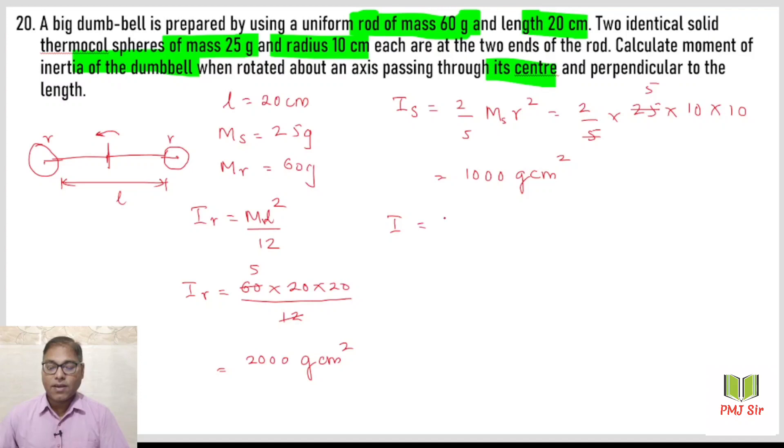Now the total system moment of inertia is: moment of inertia of the rod plus two times moment of inertia of the sphere plus the sphere is at some distance from the axis of rotation, so we use parallel axis theorem Mh square. h is the distance from axis of rotation to the sphere center. From the diagram, this is 10 centimeter plus the sphere's 10 centimeter radius, so h is 20 centimeter.